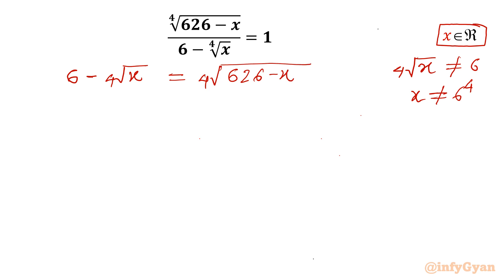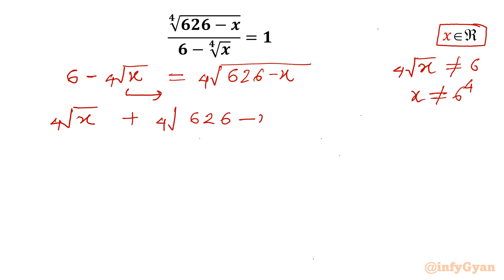After rearranging the terms and taking this term to the right, it will become 4th root of x plus 4th root of (626 minus x) equal to 6.